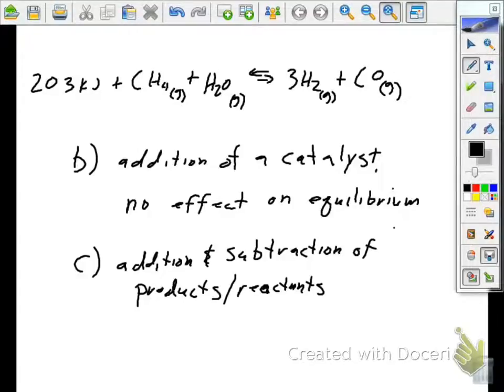So, there's too many scenarios to talk about when we talk about addition and subtraction of products and reactants. You just have to know how that's going to affect Q. If you know how it affects Q, then you can decide which way it shifts left or right. Any questions or comments that you guys have on that?